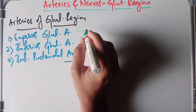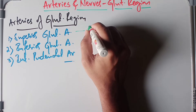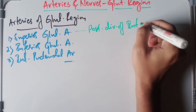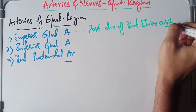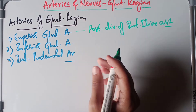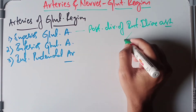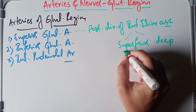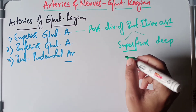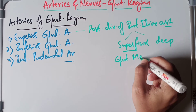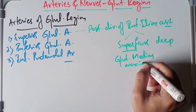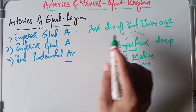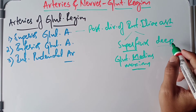The superior gluteal artery is a branch of the posterior division of the internal iliac artery. As it enters the gluteal region through the greater sciatic foramen, it divides into a superficial and a deep branch. The superficial branch supplies the gluteus medius and the gluteus maximus muscles.